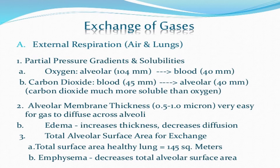Gases diffuse across the diffusion membrane comprising the alveolar epithelium, the capillary epithelium, and the basement membrane in between. The thickness of this alveolar membrane is 0.521 microns, providing an easy route for gas diffusion. If the thickness increases, the condition is called edema, which decreases diffusion and leads to impairment in gas transportation.